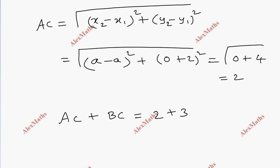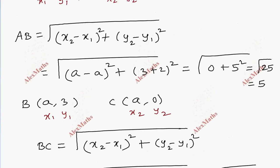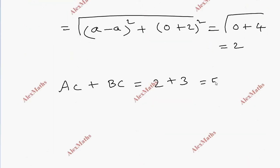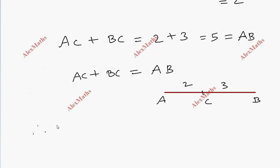Now AC is 2 plus BC is 3, that's 5. AC plus BC equals AB, which is 5. Therefore, they are collinear.